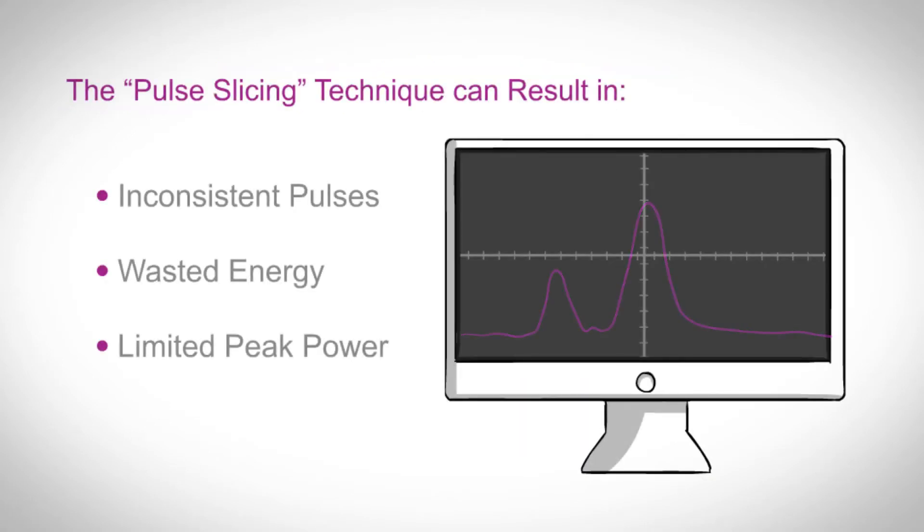Pulse slicing can create inconsistent pulses, waste energy, and limit available peak power.